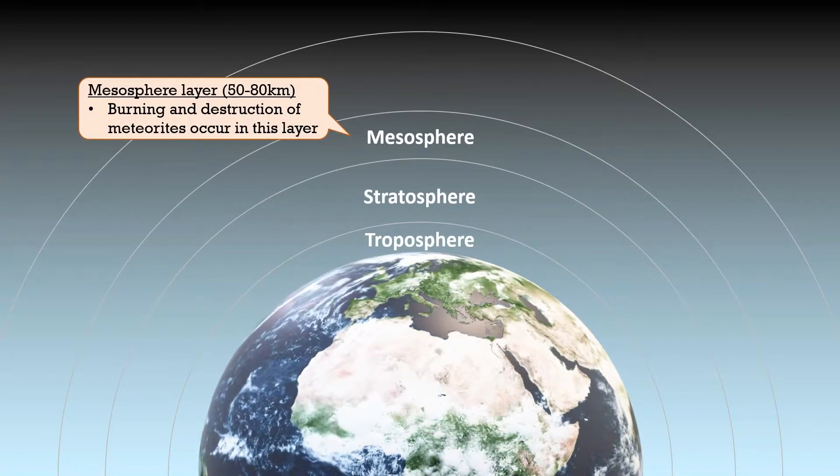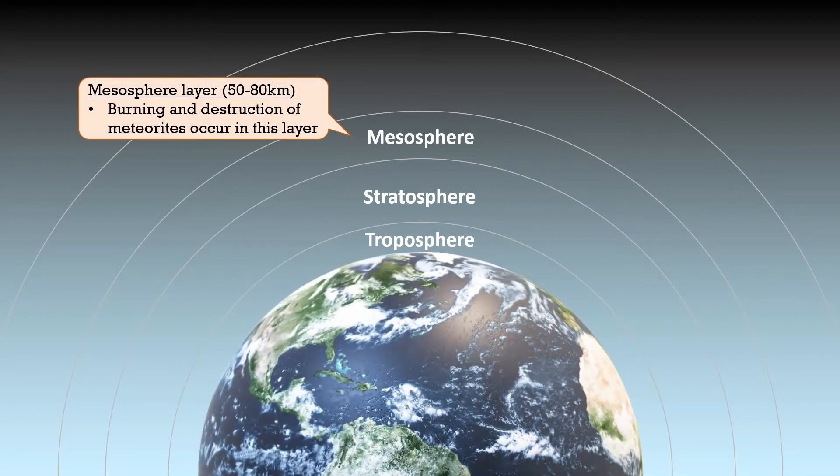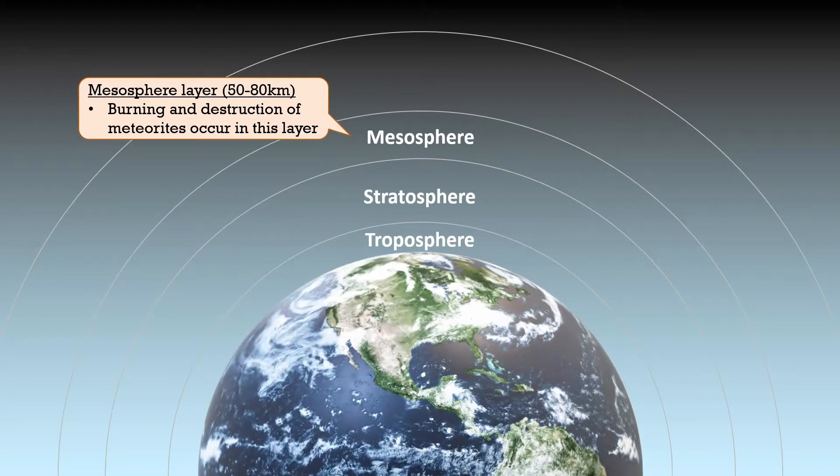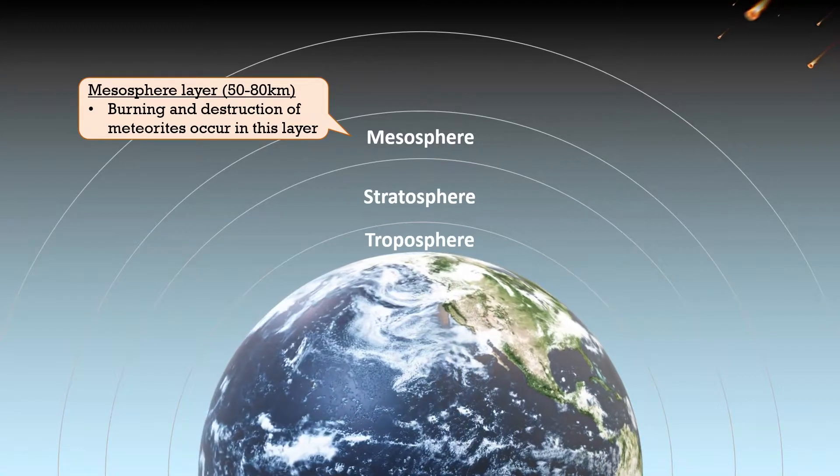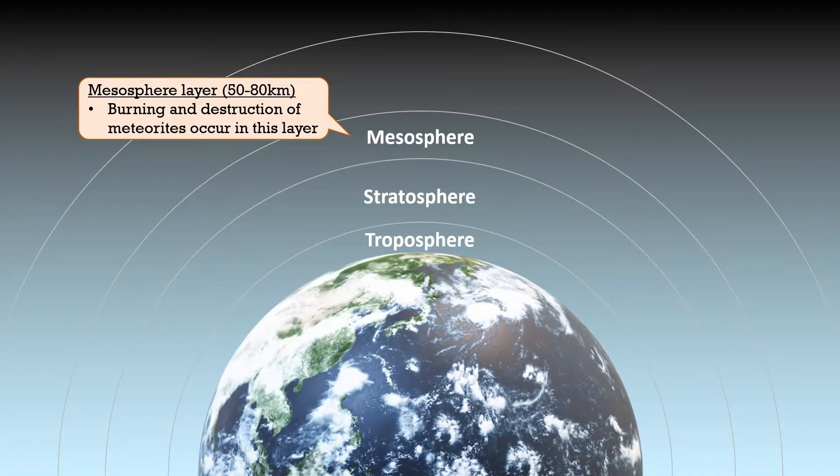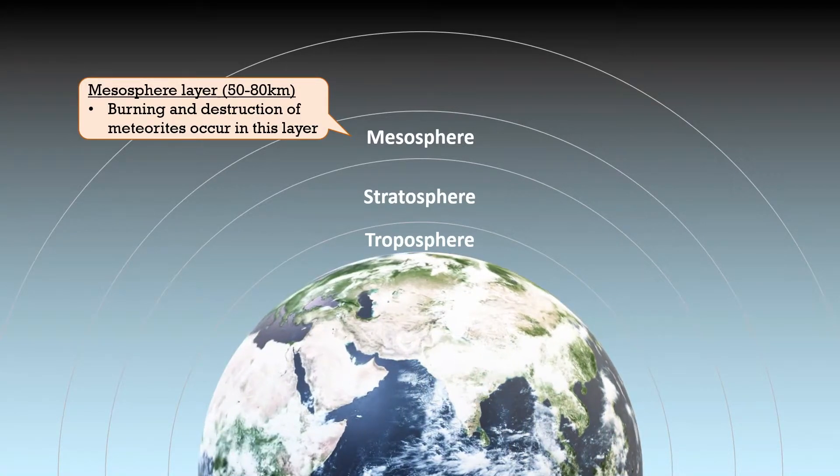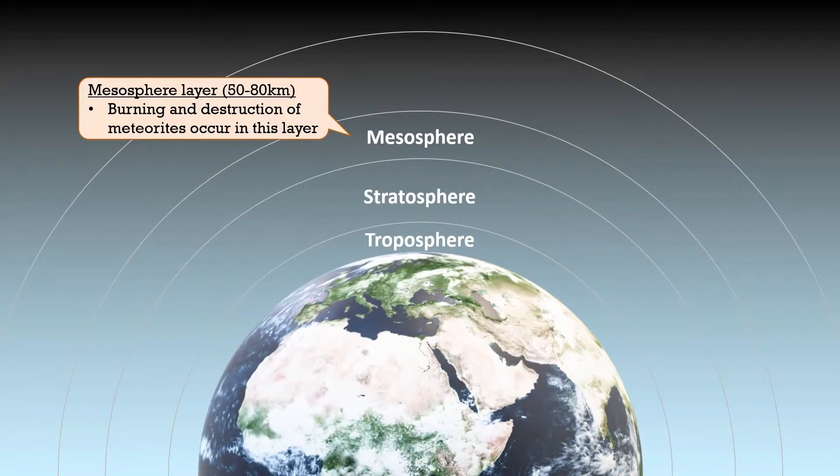Next up is the mesosphere. This layer is like an armor of the Earth. In outer space, there are meteors flying here and there and some of them may crash into Earth. But as they enter the atmosphere, they will start burning up and by the time they reach the mesosphere, there is usually nothing left. Only certain large meteors can make it through all the layers and hit the Earth, which forms a crater.